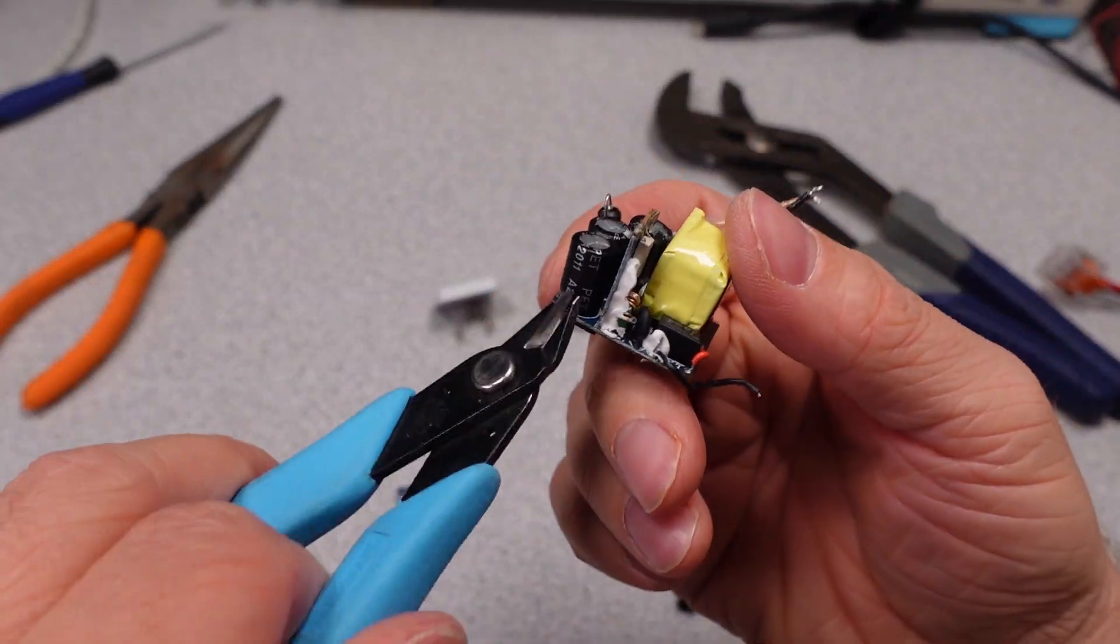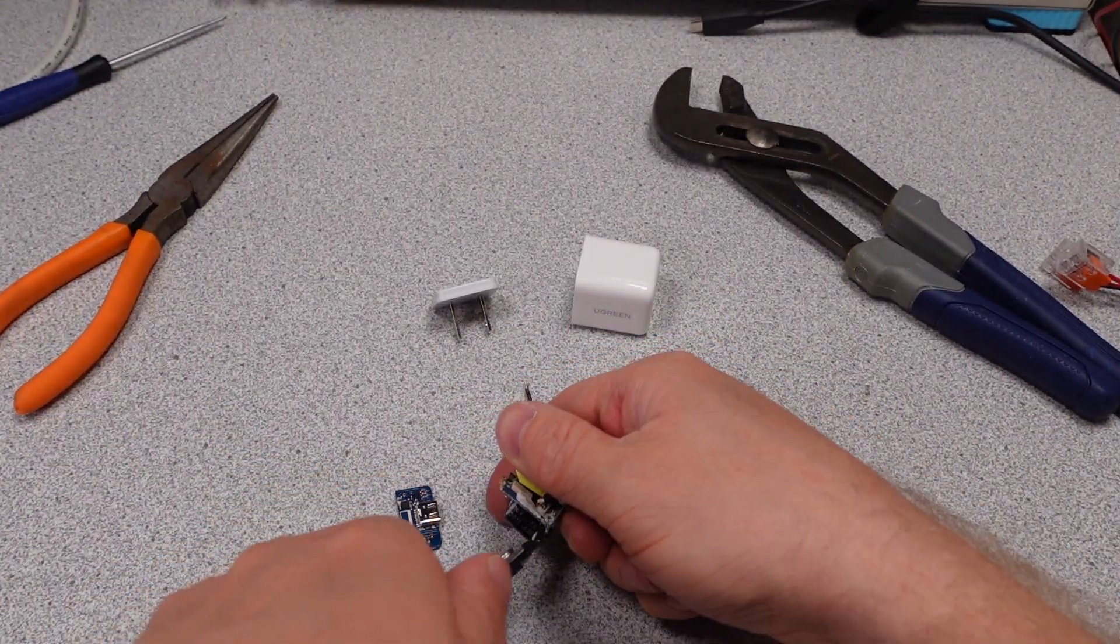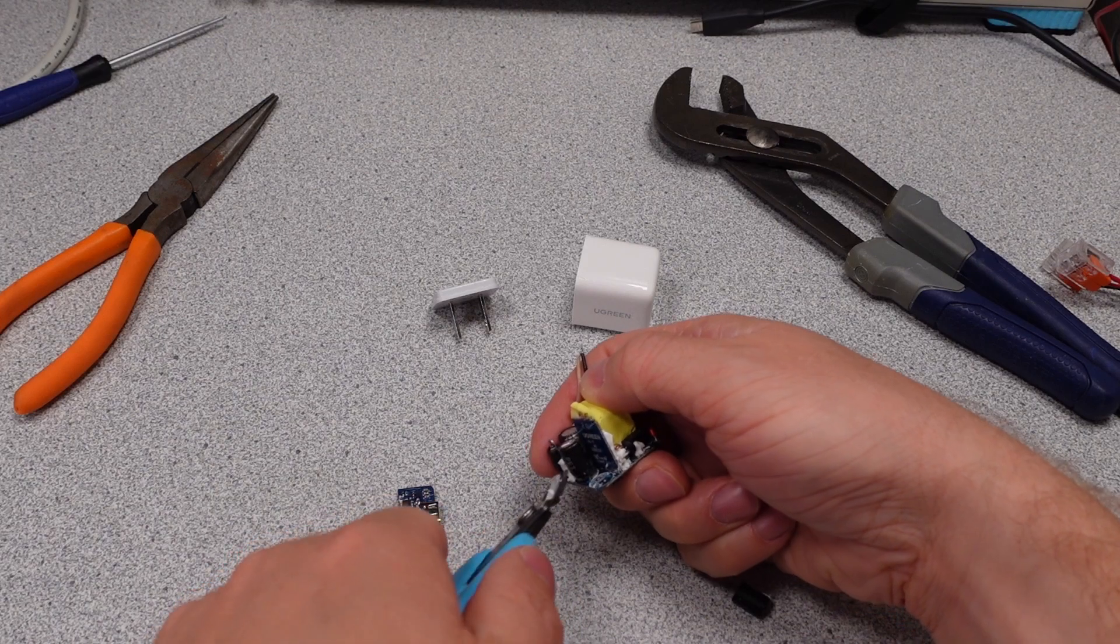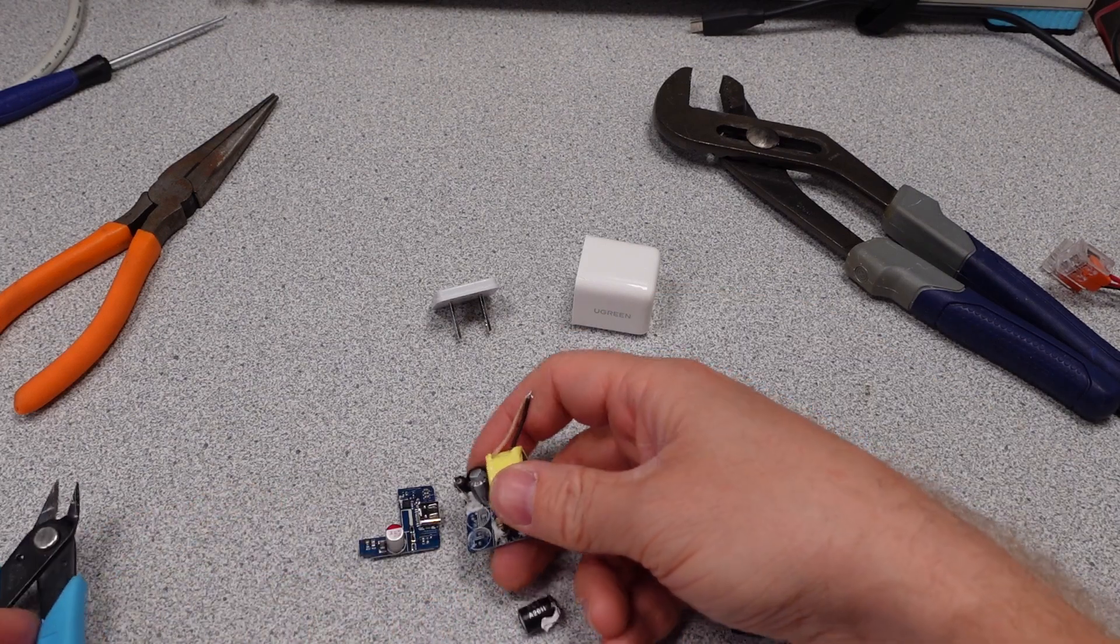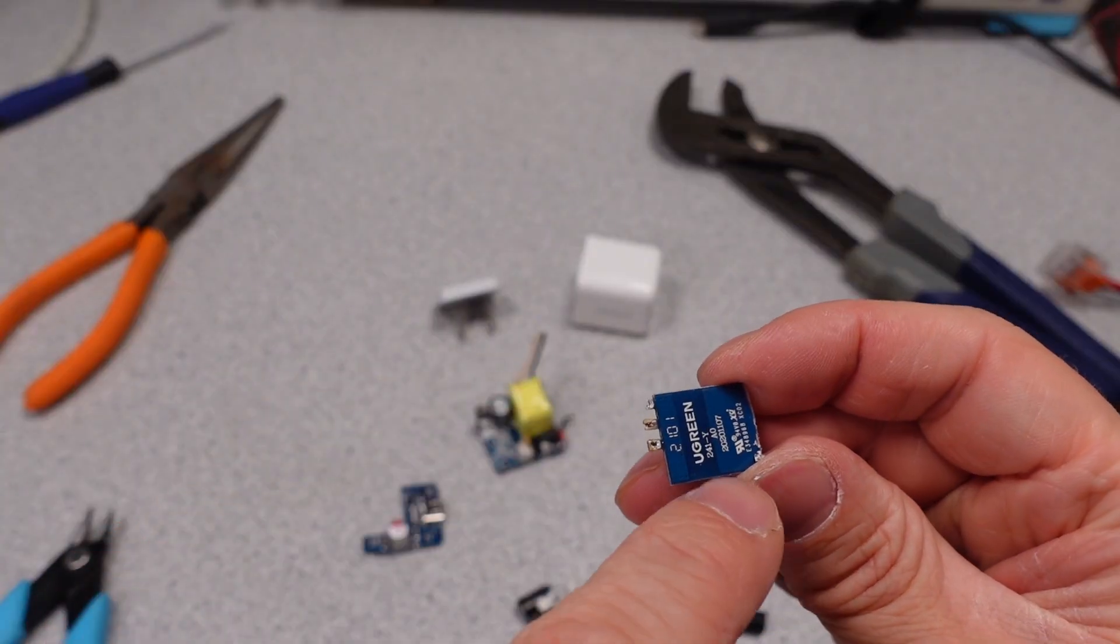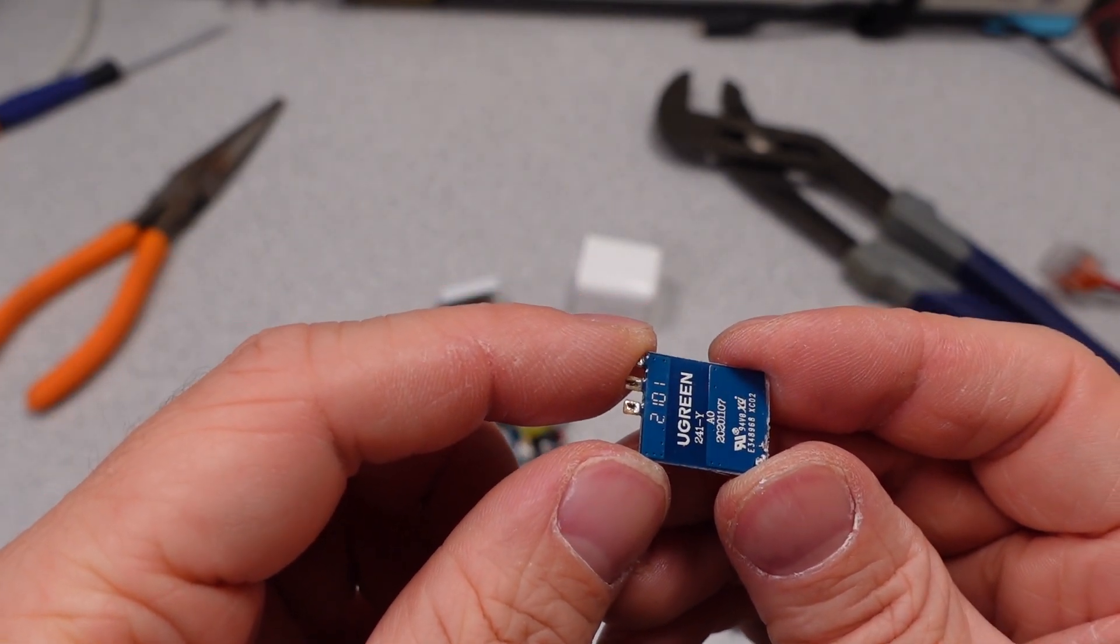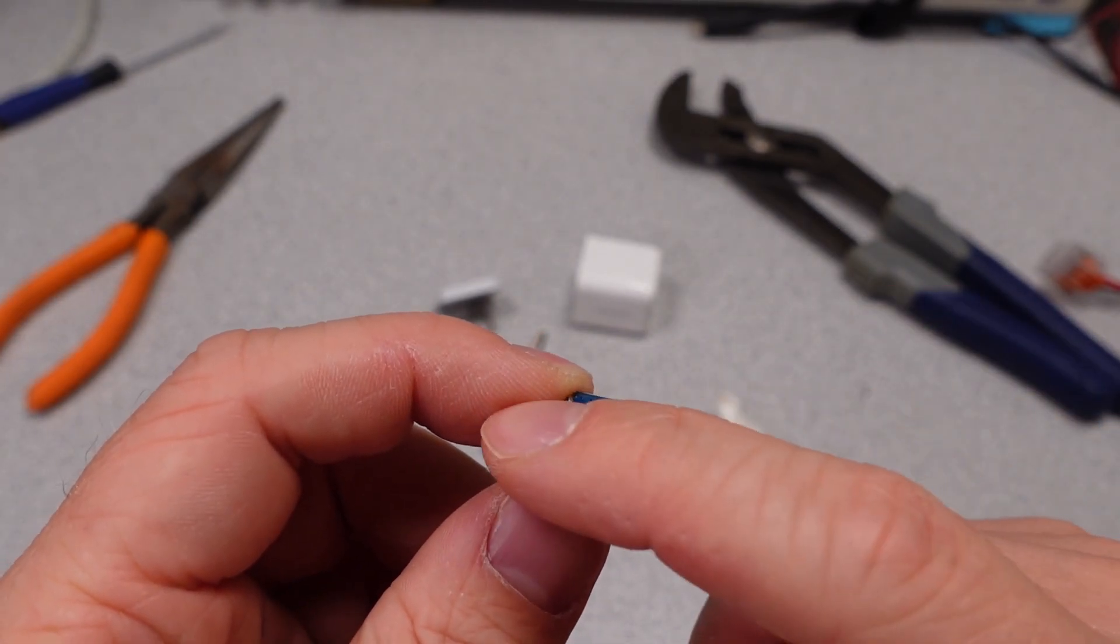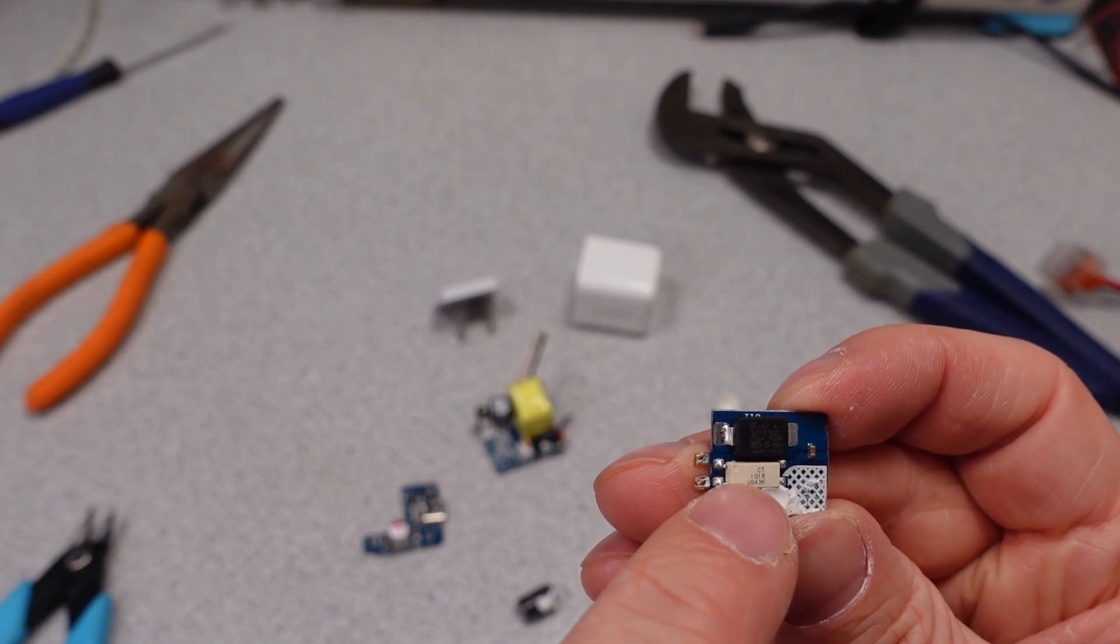All right. Well, this is a destructive teardown. So we're going to start getting destructive. All right. Got it removed. So we can see we have the isolation slot board there between the primary side and the secondary side. So the mains, the wall, and then your USB port.